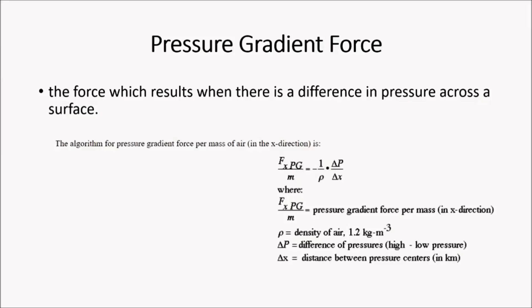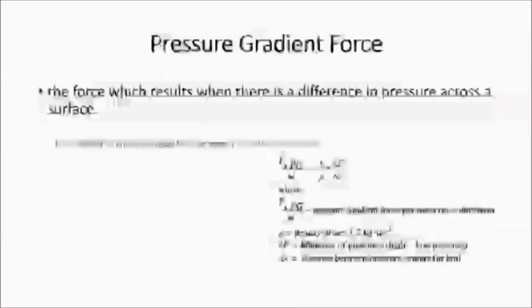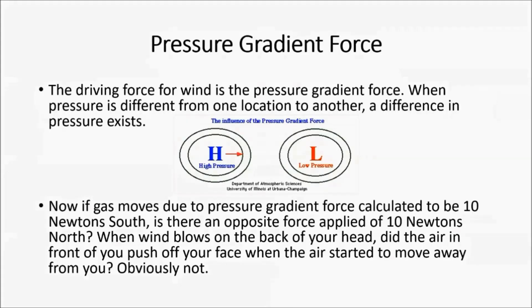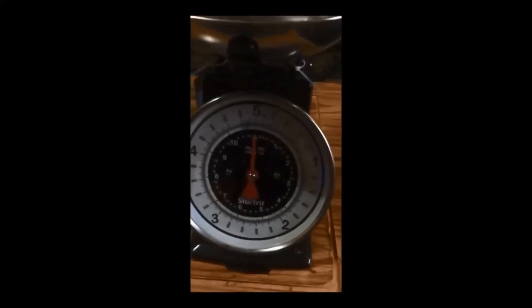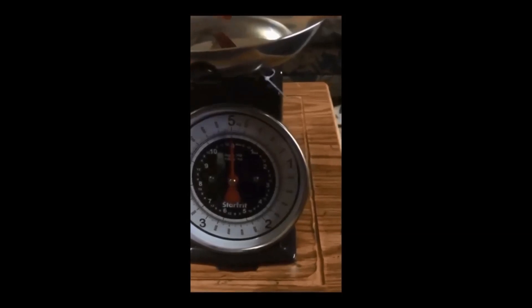The following is the equation to calculate the pressure gradient force — force based on difference in pressure and density. The driving force for wind is the pressure gradient force. When pressure is different from one location to another, a difference in pressure exists. If gas moves due to a pressure gradient force calculated to be 10 Newtons south, is there an opposite force of 10 Newtons north? When the wind blows on the back of your head, did the air in the front of you push off your face when the air started to move away from you?